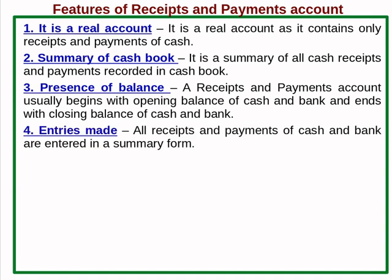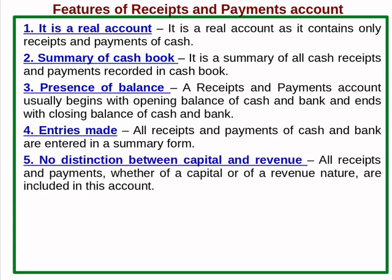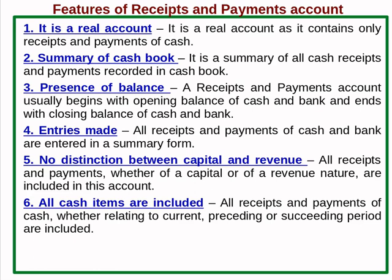Fourth, entries are made in summary form — all receipts and payments of cash and bank are entered in summary form. Fifth, capital and revenue nature distinction: all cash items are included — all receipts and payments of cash, whether relating to current, preceding, or succeeding periods, are included.